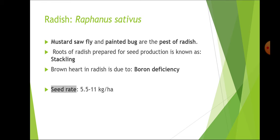In stecklings, we take one-fourth or one-third portion of the root, which is taken for planting in the next season. These are basically used for seed production in the case of radish.